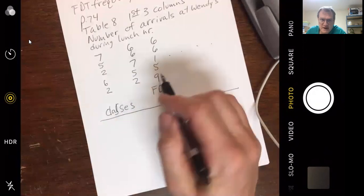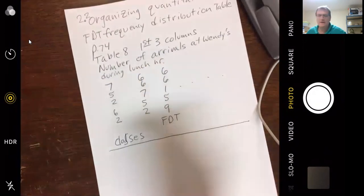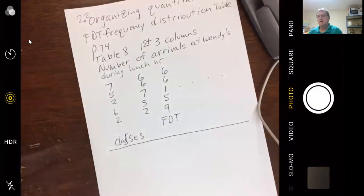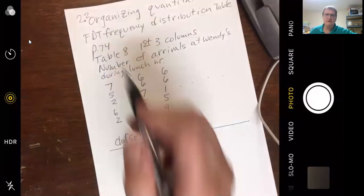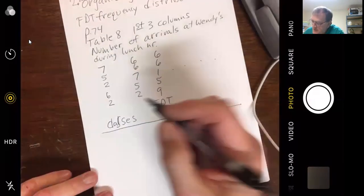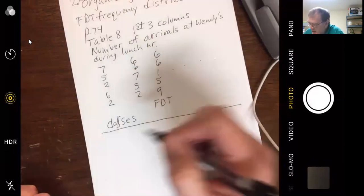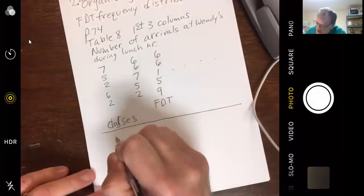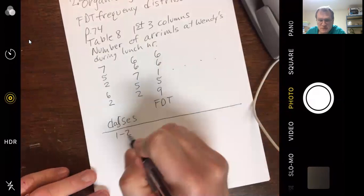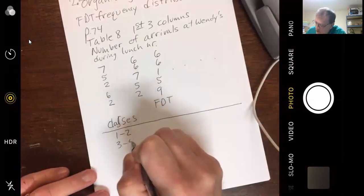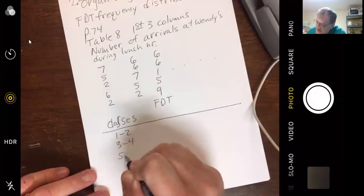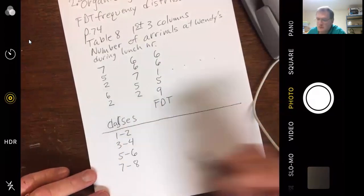We're doing a frequency distribution table. They've got the first three columns of table 8. It's page 74. So, I'm going to do it. We're going up to 7. I could go 1 to 3. I'll try 1 to 2 customers. Between 3 and 4 customers. 5 to 6 customers. And let's say 7 to 8 customers.